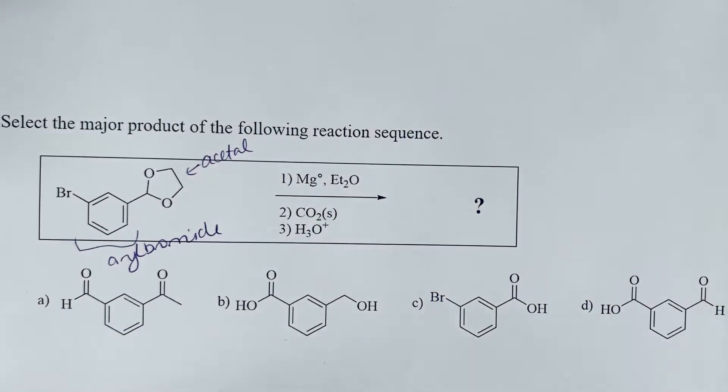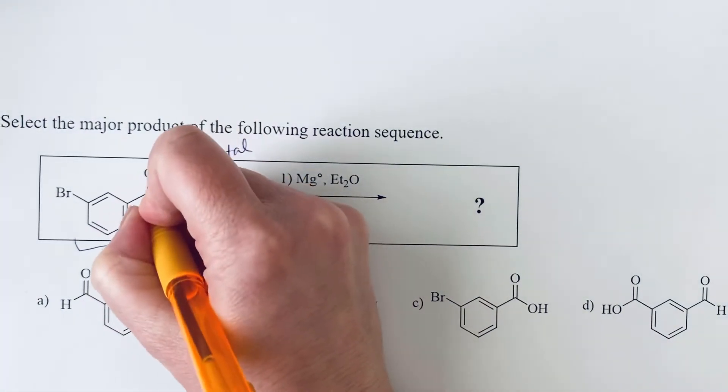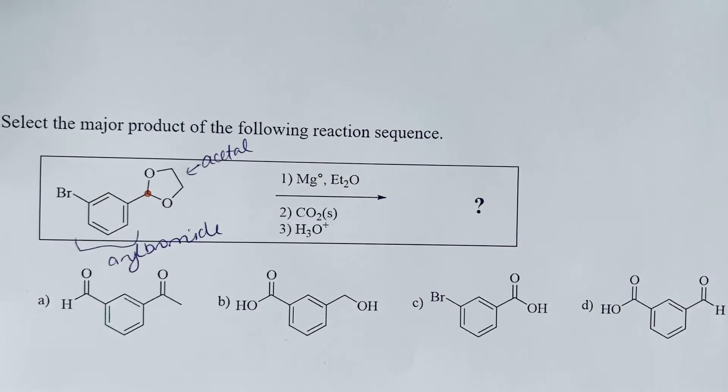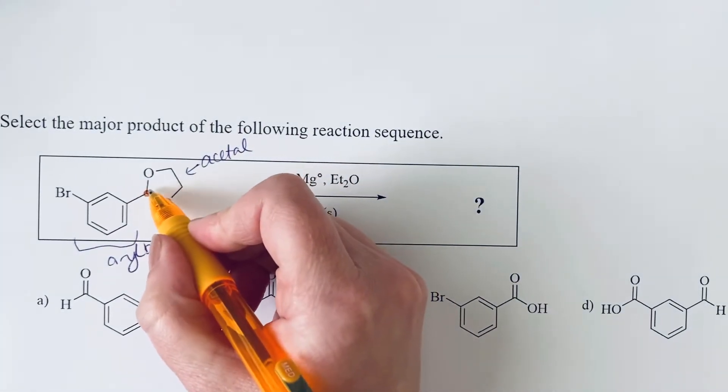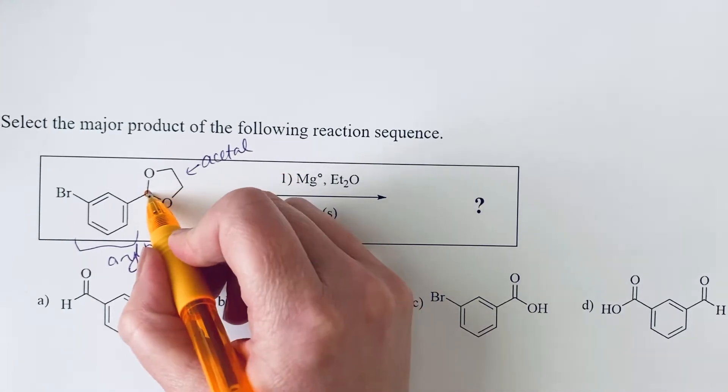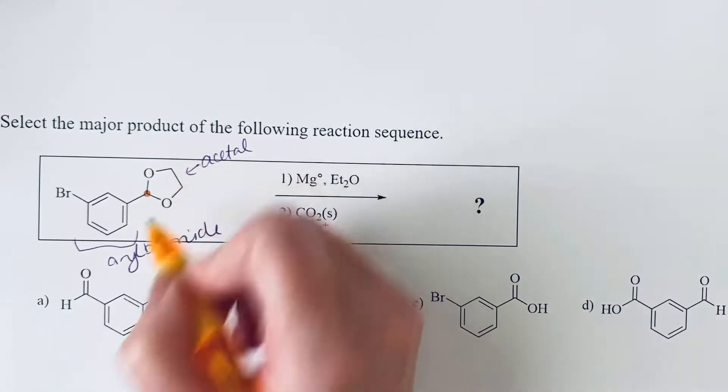So acetals, we hopefully remember, are protected either aldehydes or ketones. So the carbon that has the two single bonds to oxygen, that is the acetal carbon. And so when you're protecting this, you'd be starting from the carbonyl here and you get the acetal, which kind of looks like a diether.